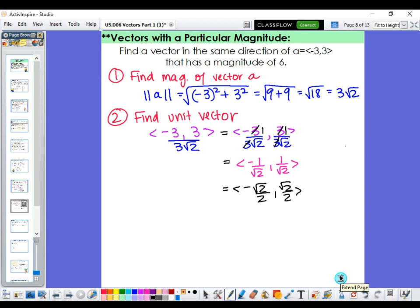So the last step, we need to make sure that it has a magnitude of 6. So our third step, we're going to multiply by the new magnitude. So we're going to take that unit vector that has a magnitude of 1 currently, and then we're going to put that scalar multiple out front and distribute through.